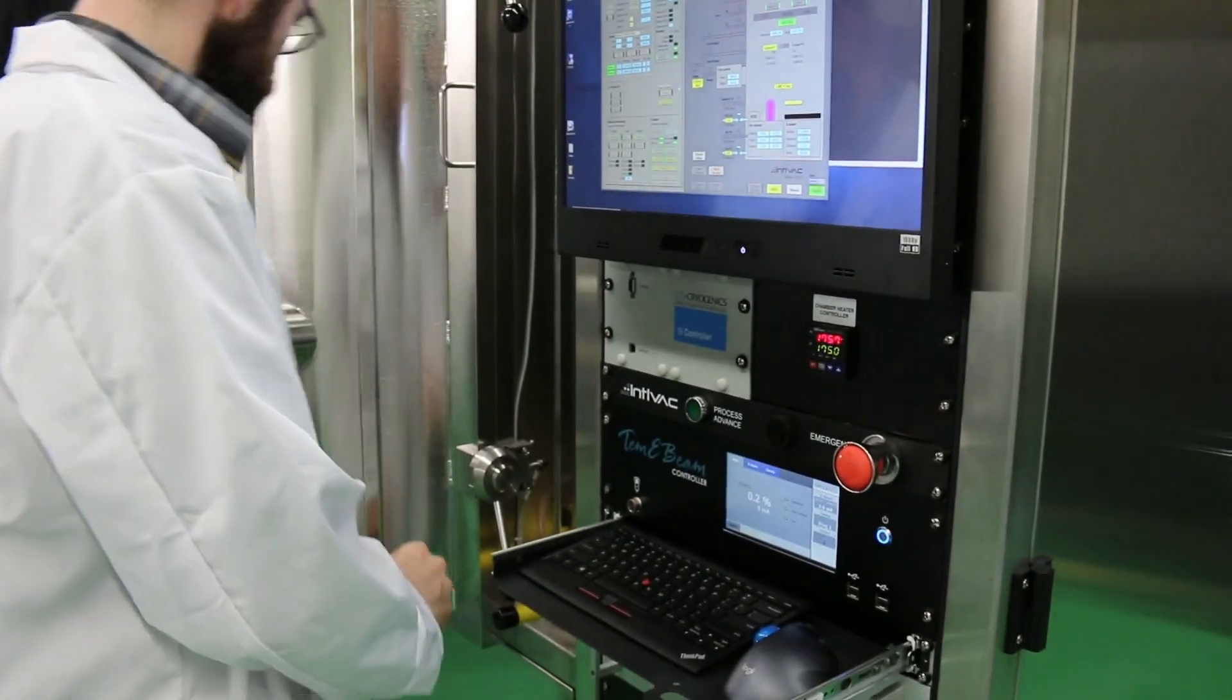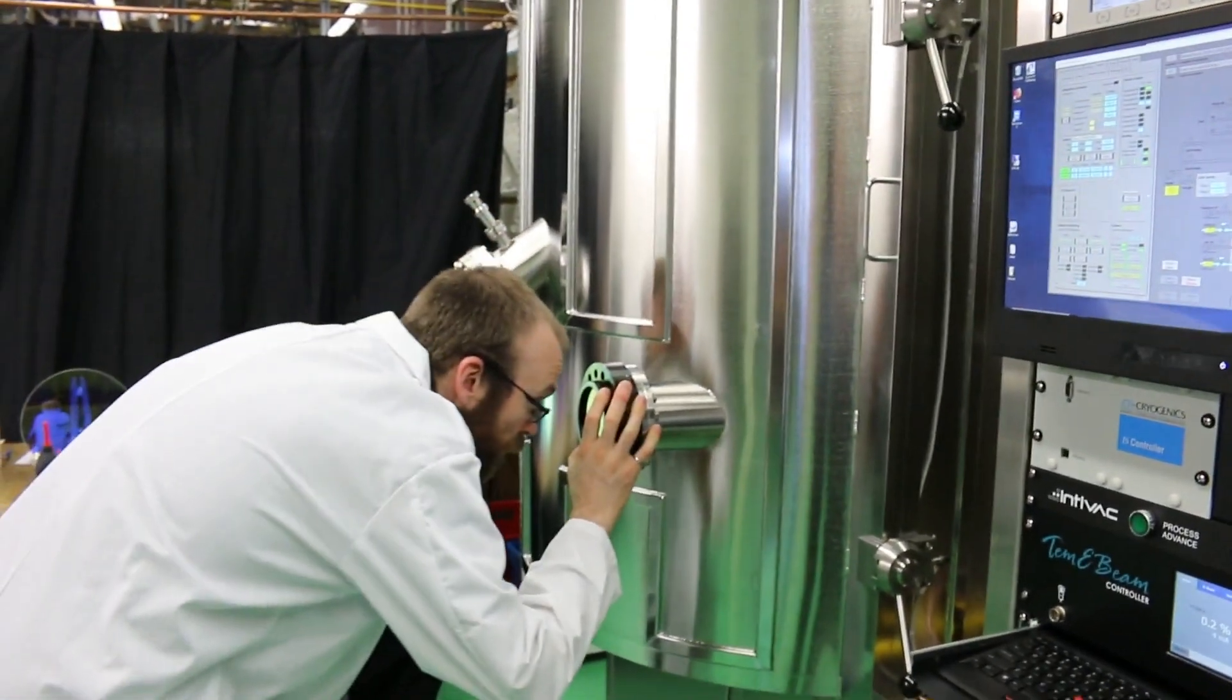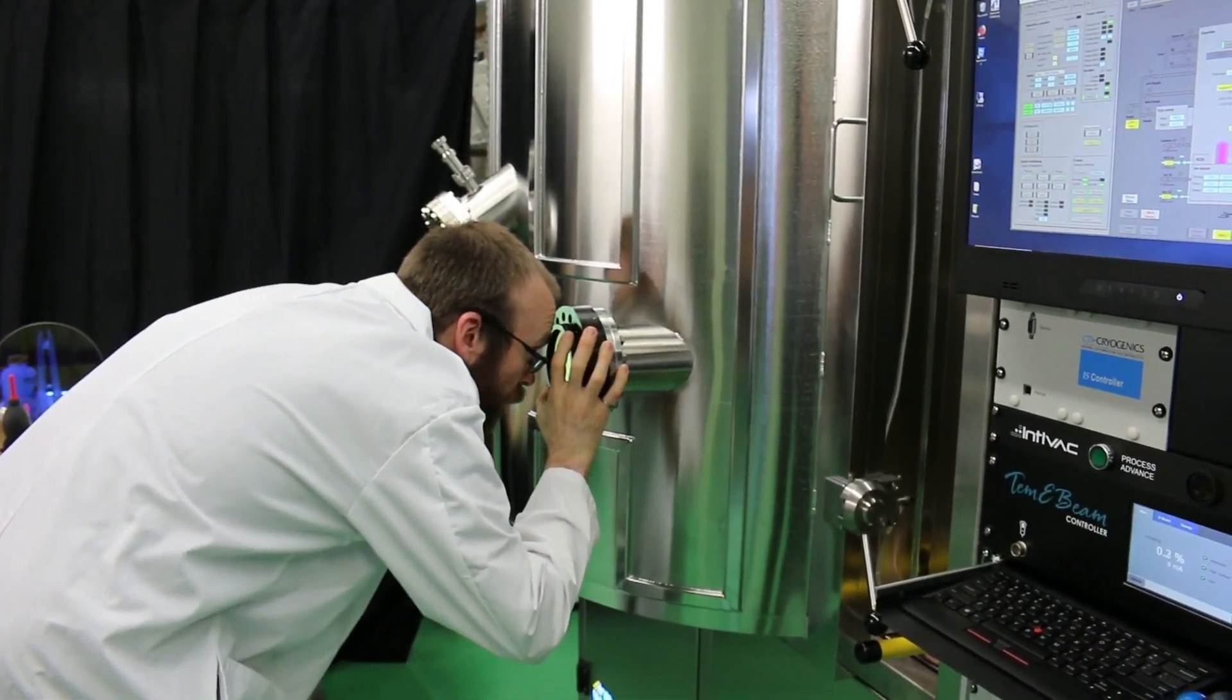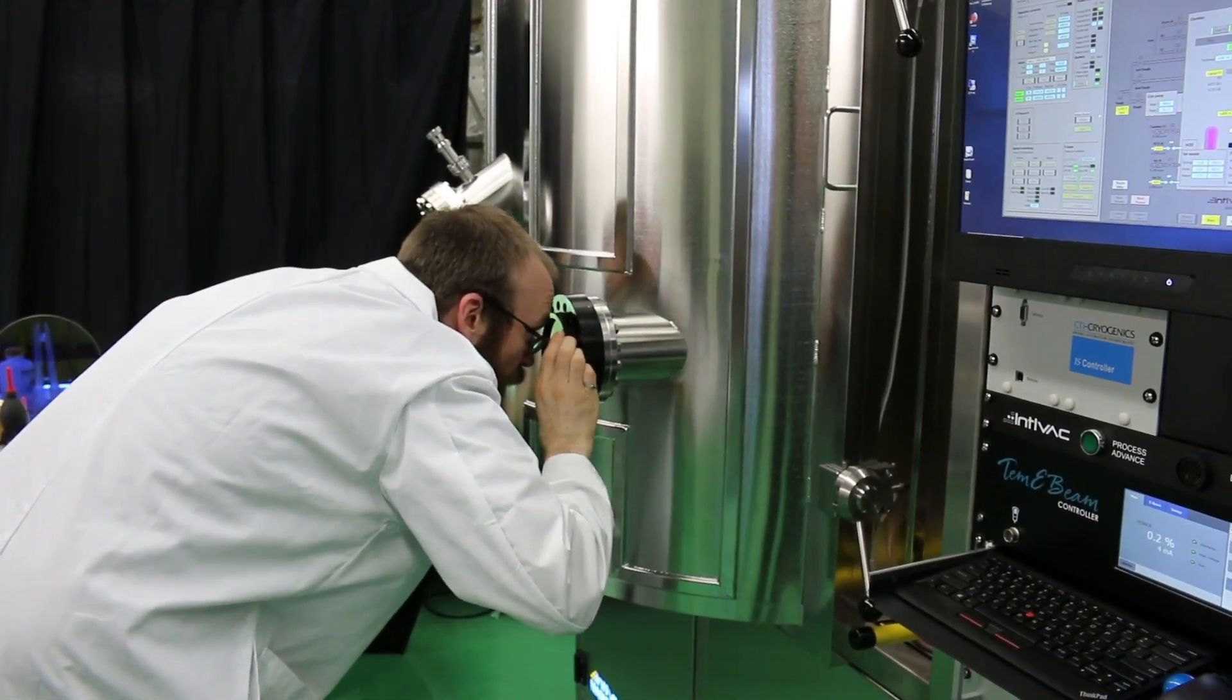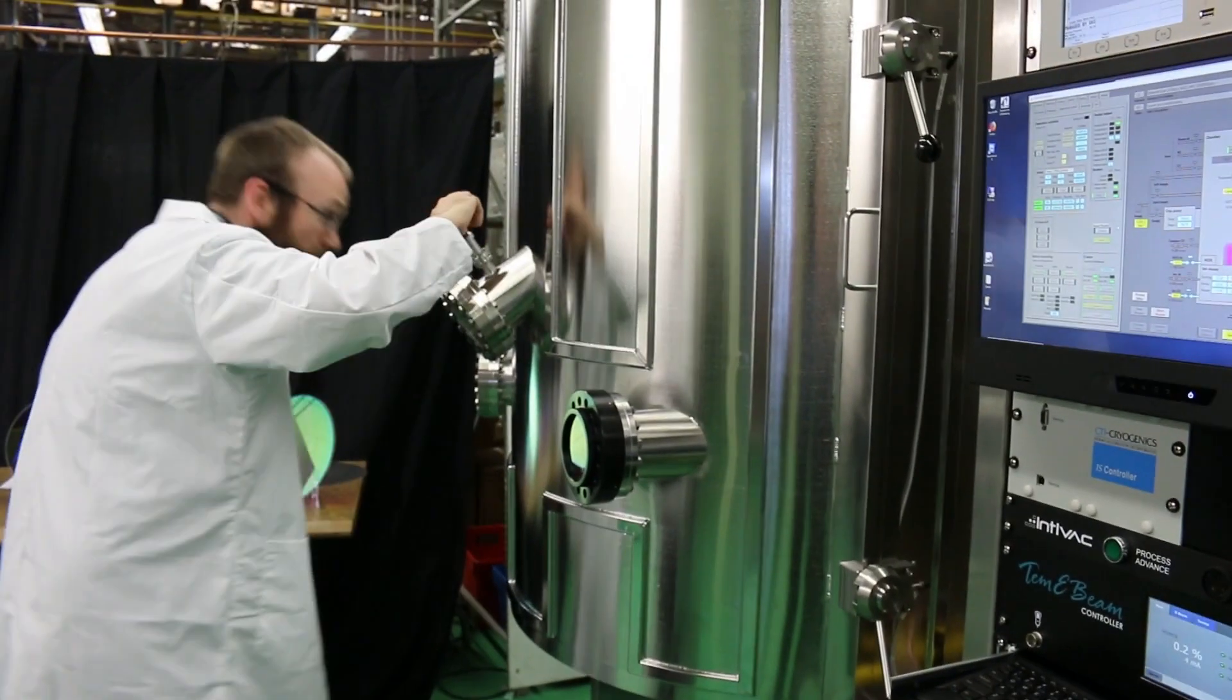The Nanochrome 4 platform has a number of operator-friendly features. Three separate spring-loaded shutter viewports allow the operator to see the evaporation source, the high current ion source, and the sample stage directly.